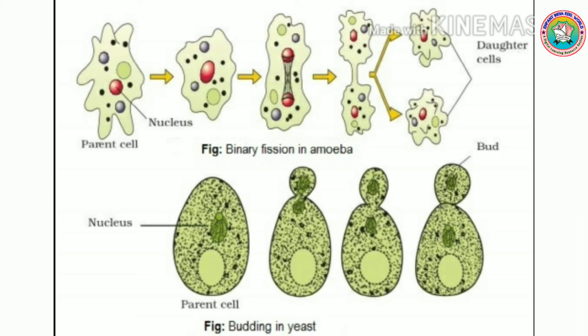After the detachment of the bud, that bud lives freely as a single entity. Thus, asexual reproduction takes place in amoeba and yeast cells. I hope you understand very well about asexual reproduction.